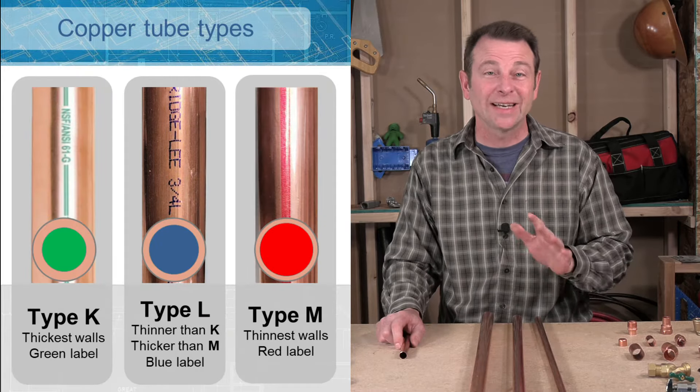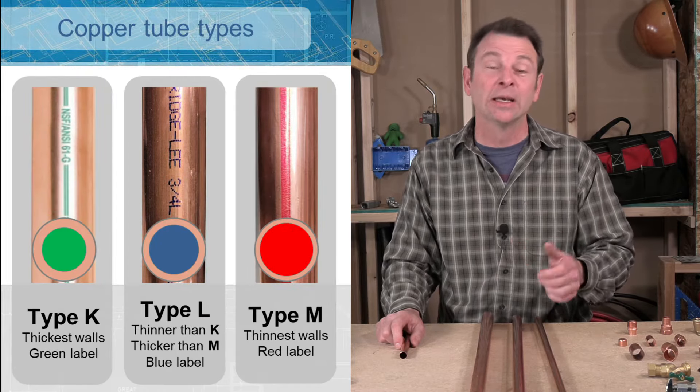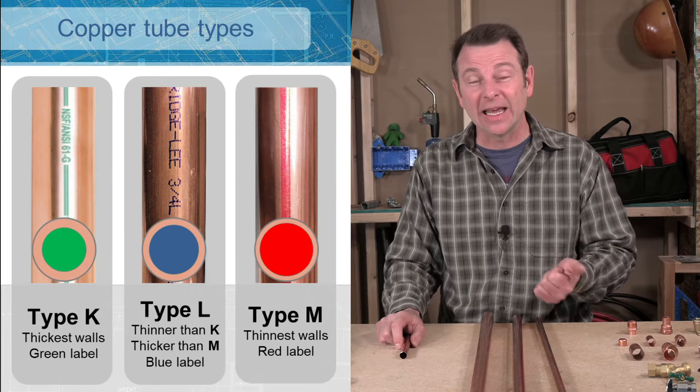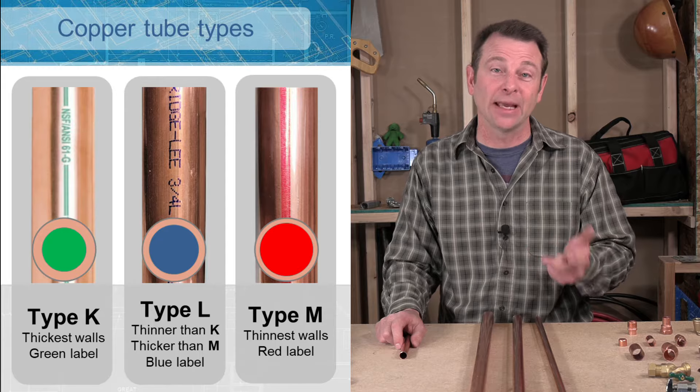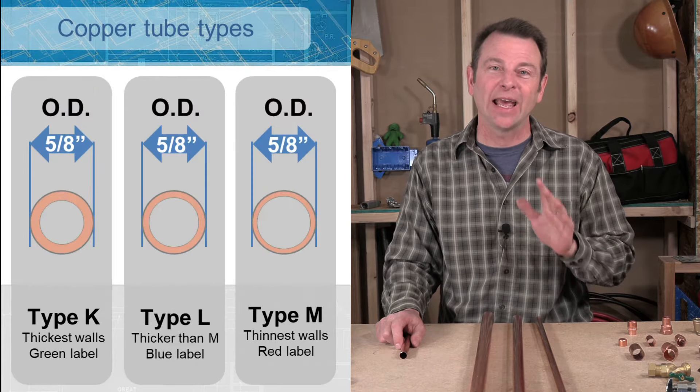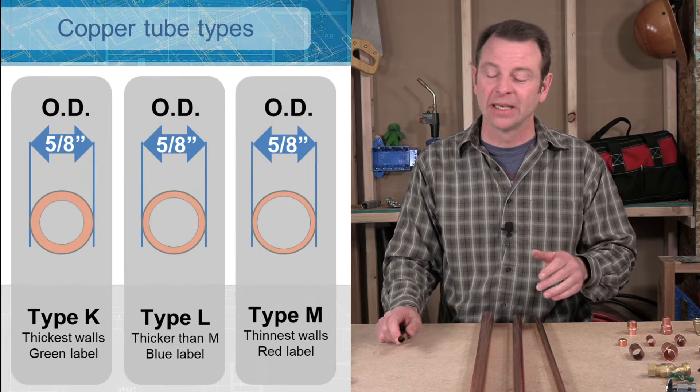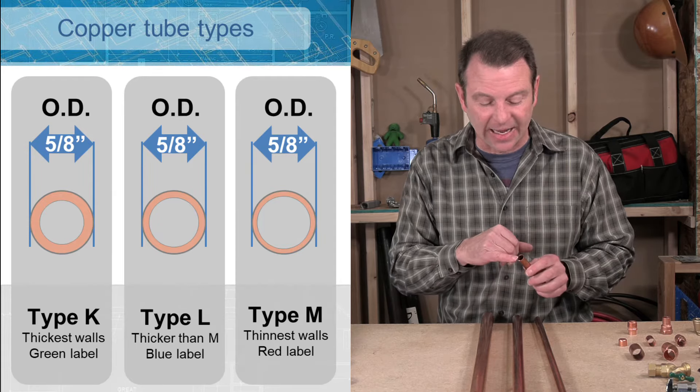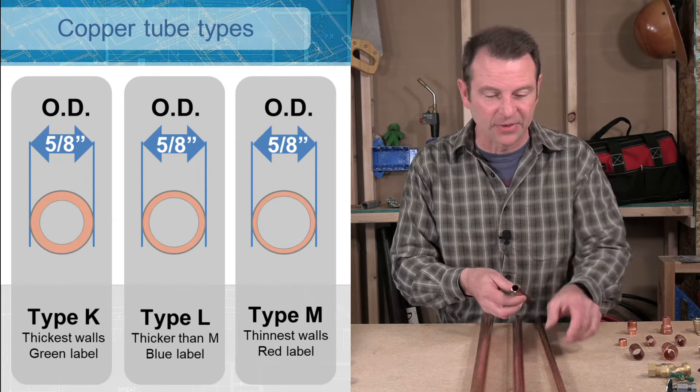There are three types of copper pipe that you'll see as well. They're called out by a letter of the alphabet. You might see type K, type L, or type M. Type K will have the heaviest wall of all the pipes. And what I mean by the wall of the pipe is the thickness of the outside of this pipe.